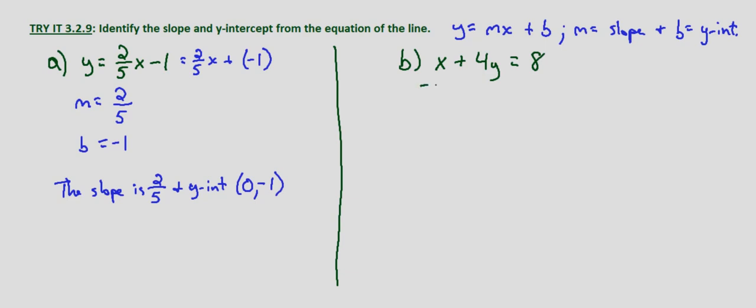So we'll subtract x from both sides. That gives us 4y equals negative x plus 8. Now divide both sides by 4.